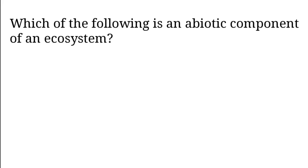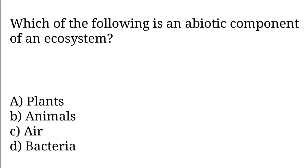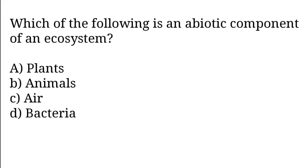Which of the following is an abiotic component of an ecosystem? Options: Plants, animals, air, bacteria. So the correct answer is option C. Air is an abiotic component of an ecosystem.